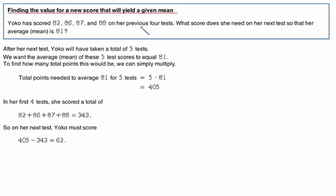Finding the value of a new score that will yield a given mean, that's kind of a long-winded way of saying, what do I want to score in order to get a certain average?